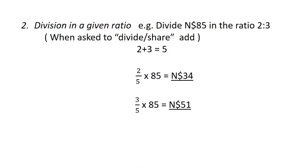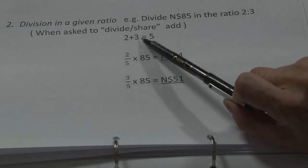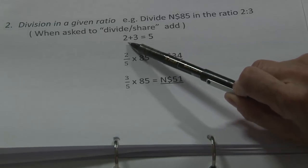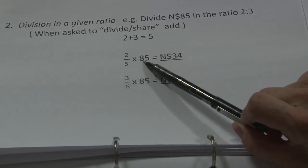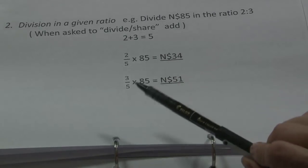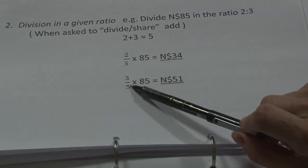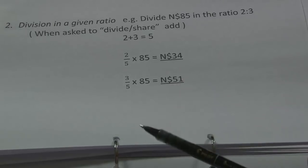The next type: division in a given ratio — for example, divide 85 in the ratio of 2 to 3. When you are asked to share or divide, you add the ratio: 2 plus 3 gives 5. So the first share is 2 fifths of 85 dollars, which gives you 34. And the other one is 3 fifths of 85 dollars, which gives you 51 dollars.